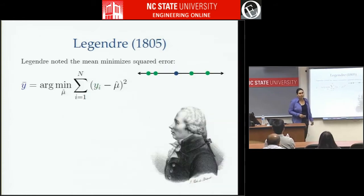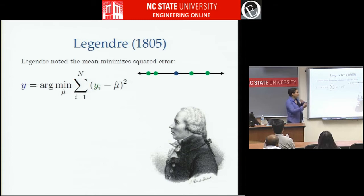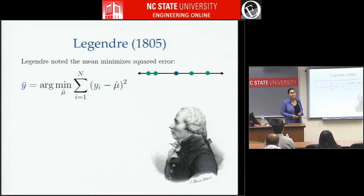It was another 200 years before Legendre really formalized it. If we have some samples — the green dots, the y_i's — and we want a new sample mu-hat that's close to each of those y_i's in the squared error sense, then the best thing we can do is the mean. The mean minimizes the squared error to all the samples, which specifies in what way we're able to denoise this way.